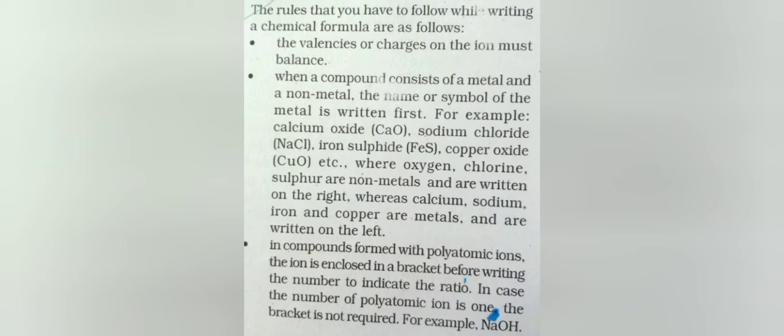The rules that you have to follow while writing a chemical formula are as follows. When we write chemical formula, we have to follow some rules. Let's see what those rules are. Number one: The valences or charges on the ion must balance. Whatever valences and charges are there, we have to balance them.